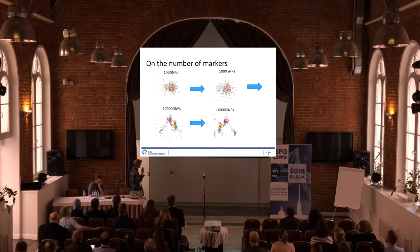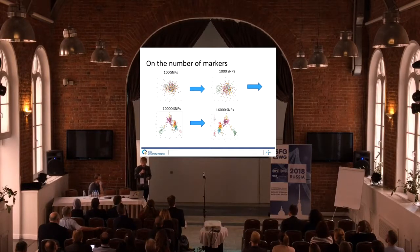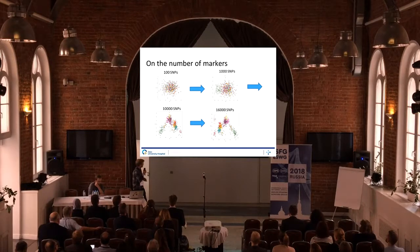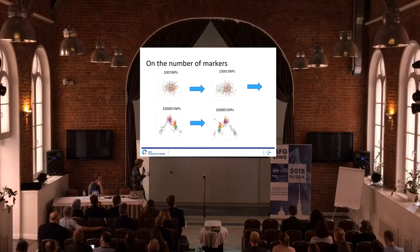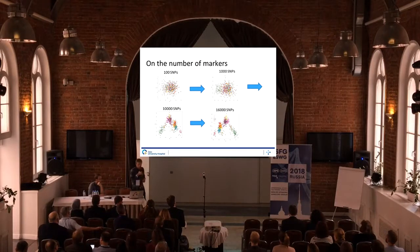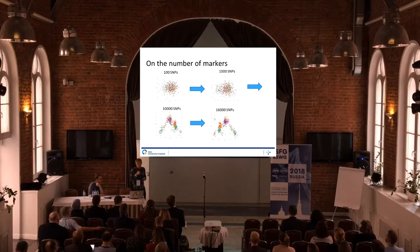And if we use all 16,000 markers, we see a final clear pattern. The message here is that either we have to preselect informative markers — which is essentially what we've done with the ancestry-informative SNPs — or we can use a large number of markers and the analysis will basically use the markers with the most information.